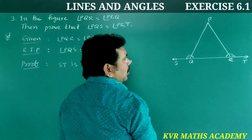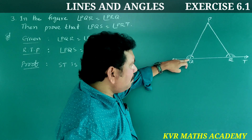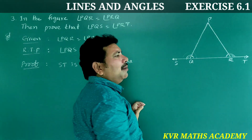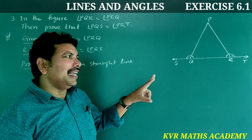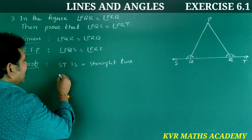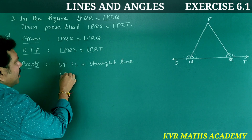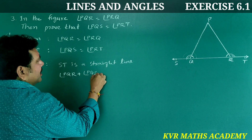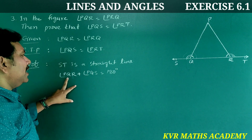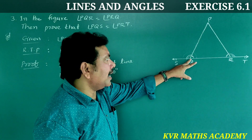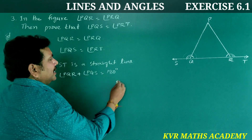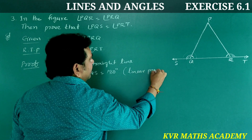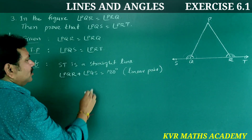At point Q, angle PQR plus angle PQS — the sum of these two angles — equals 180 degrees. This is a linear pair. So angle PQR plus angle PQS equals 180 degrees. Take this as equation number one.